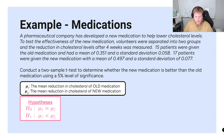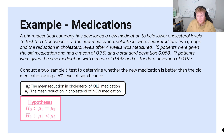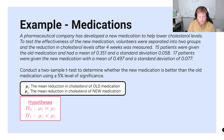We want to know if the new medication is better. The new medication is represented by mu two, and for it to be better, we should see a higher value for the reduction in cholesterol. So we're looking for whether mu one is less than mu two, or equivalently, mu two is greater than mu one.